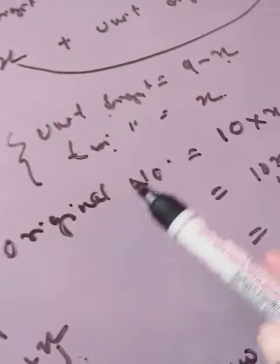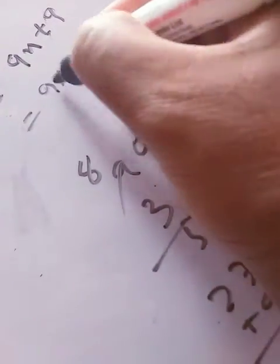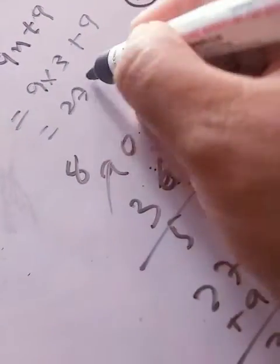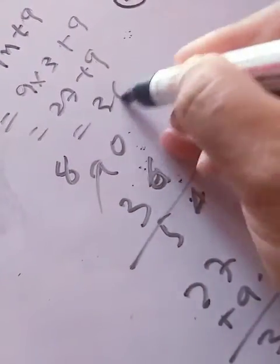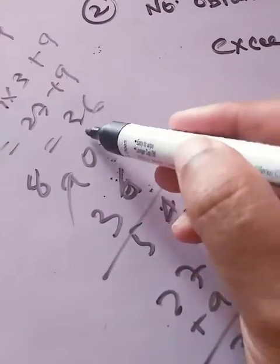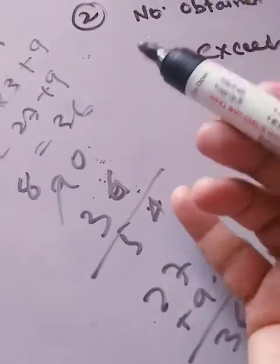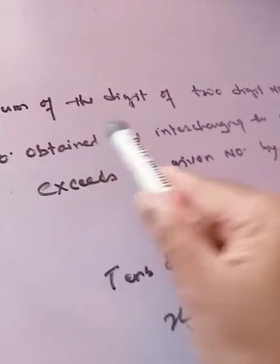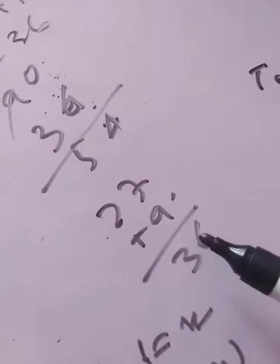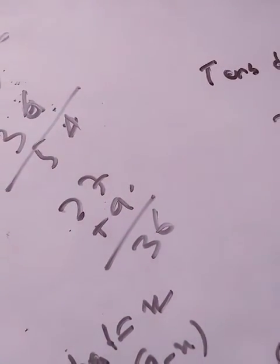Now we find the original number. The original number is 9x plus 9. Substituting x equals 3: 9 into 3 plus 9 equals 27 plus 9 equals 36. We can verify: 3 plus 6 equals 9, which matches the first condition that the sum of digits is 9. So the original number is 36.